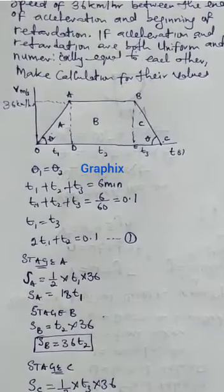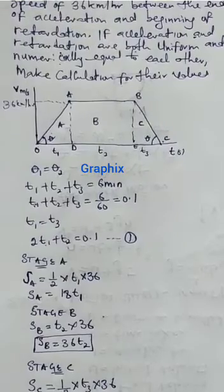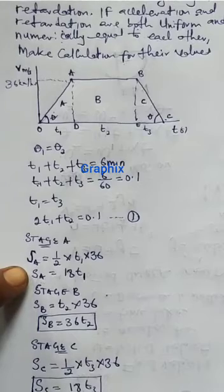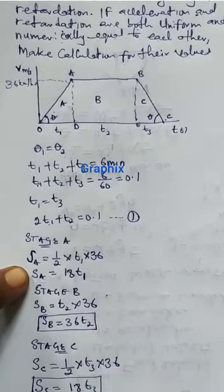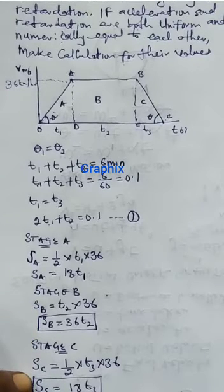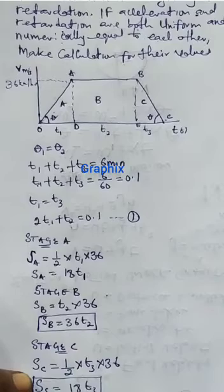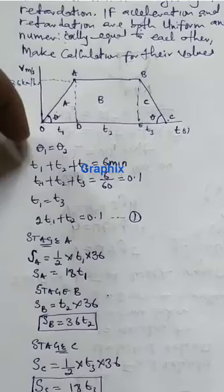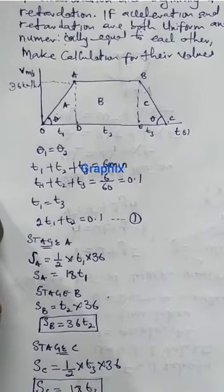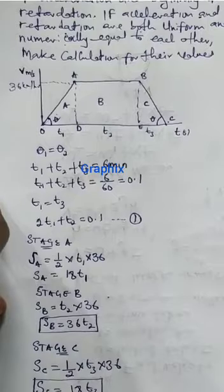The total distance S equals SA plus SB plus SC. SA is 18T1 plus SB is 36T2 plus SC is 18T3. But we know that T1 is equal to T3. Because the acceleration and the retardation are numerically equal, my S will now give me 18T1 plus 18T3, which gives 36T1 plus 36T2.